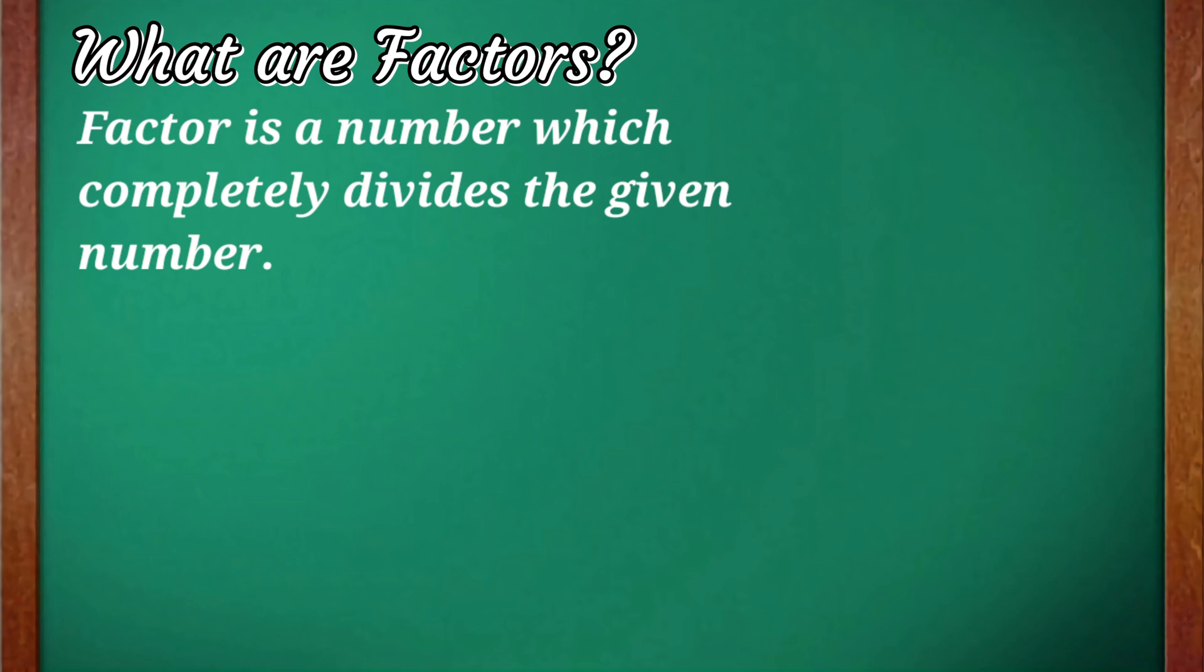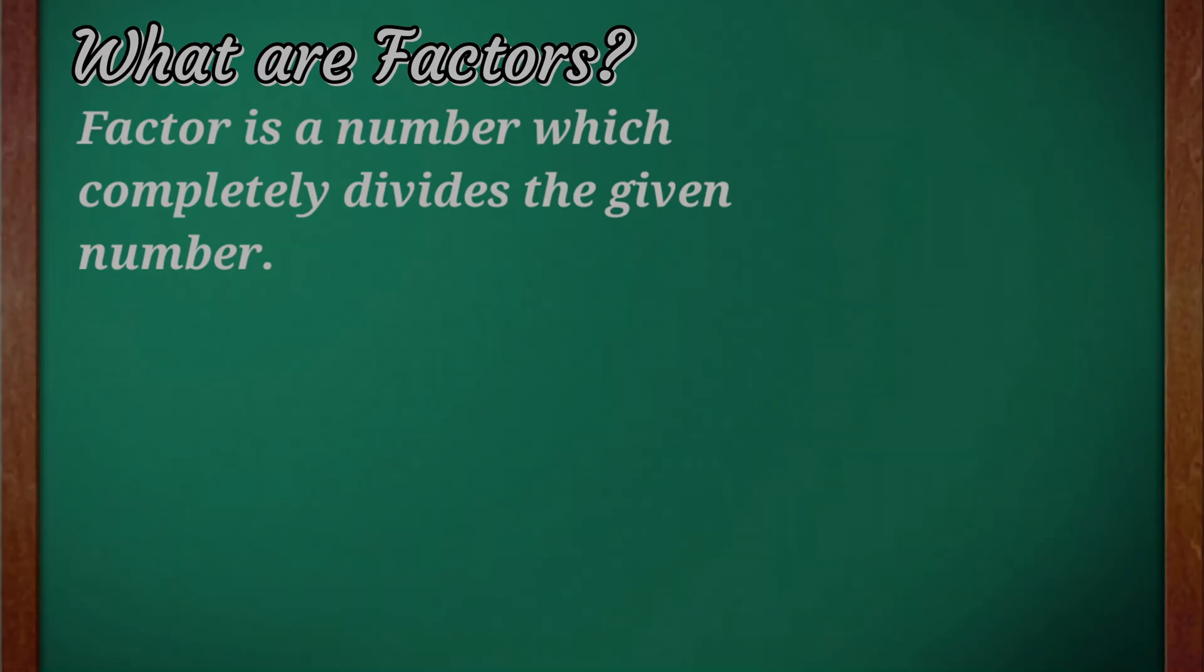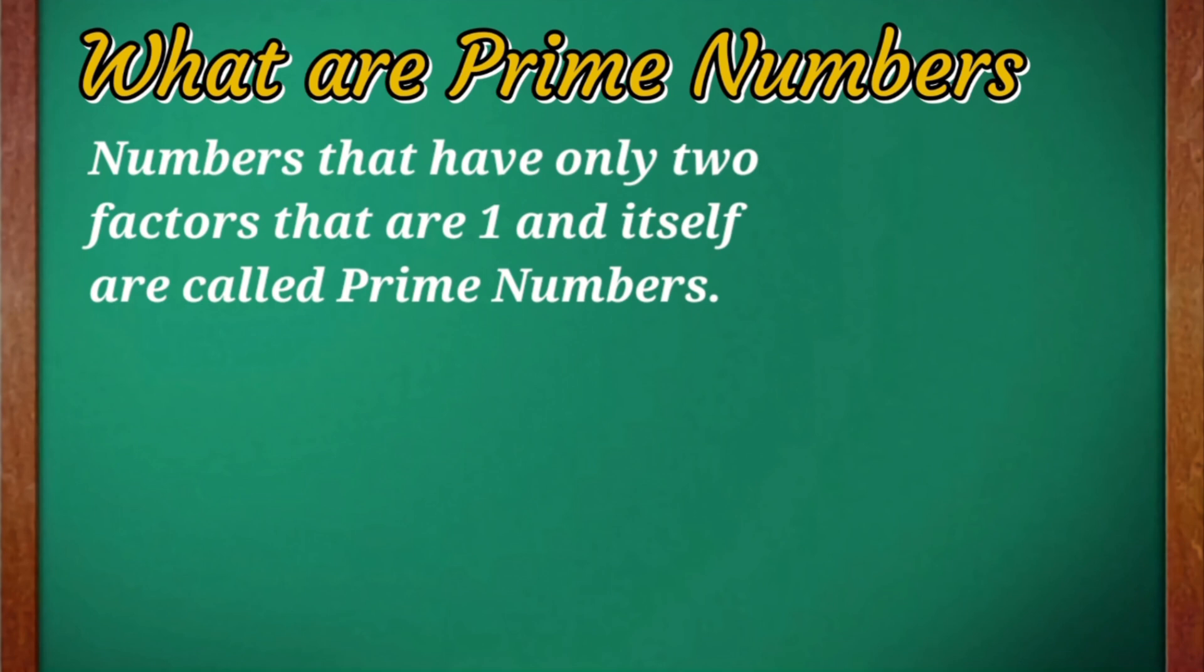Prime numbers are numbers that have only two factors: one and itself. Any number that has only two factors, one and itself, is called a prime number.